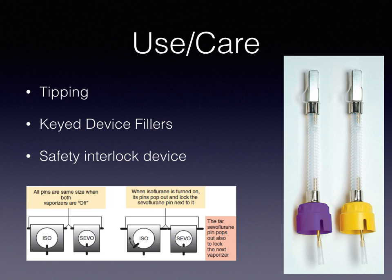The safety interlock device, which you can see at the bottom of the slide, ensures that only one vaporizer can be used at a time. You can see that when both are in the off position, the pins are not engaged, whereas in the picture on the right, when the isoflurane is turned on, its pins pop out and lock the sevoflurane pin next to it. The sevoflurane pin would similarly pop out to lock any additional vaporizer on the machine.